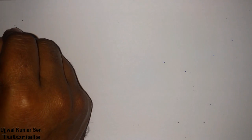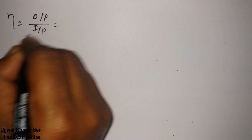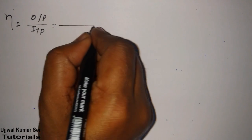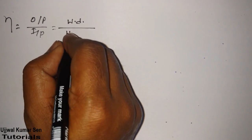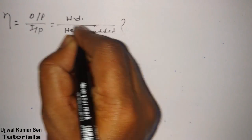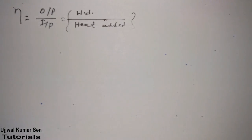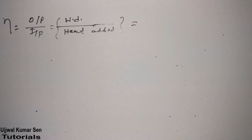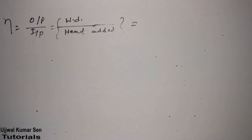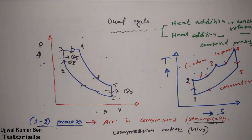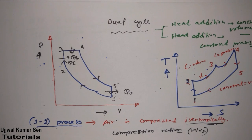We know that efficiency equals output divided by input — this is universal. For any cycle, output is work done and input is heat added. For the dual cycle, we need to find how much work is done and how much heat is added. From the diagram, heat is added in two processes: 2→3 (constant volume) and 3→4 (constant pressure).